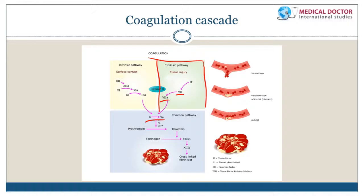From activated factor 10, we see that prothrombin becomes activated and becomes thrombin — thrombin is factor 2. The endpoint of the common pathway is the activation of thrombin by activated factor 10. Thrombin then forms fibrin from its precursor fibrinogen. The cross-linking of fibrin to create the fibrin mesh is aided by factor 13.